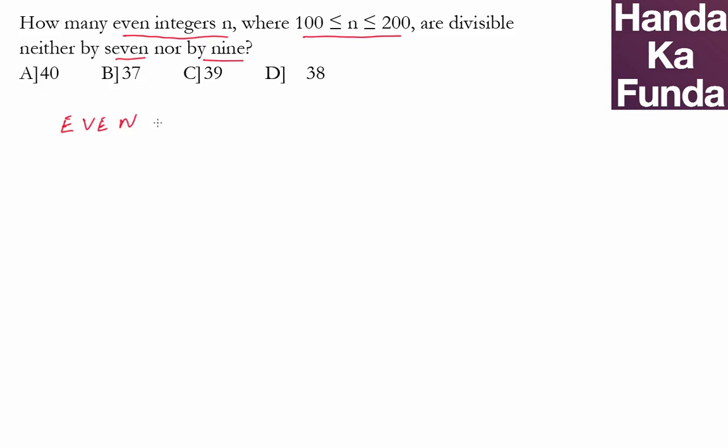That is really simple. You start from 100, 102, and your list goes on till 200. So how many are these? Last value minus first value, which is 100, by the common difference, which is 2, plus 1. So there are a total of 51 numbers which are even.